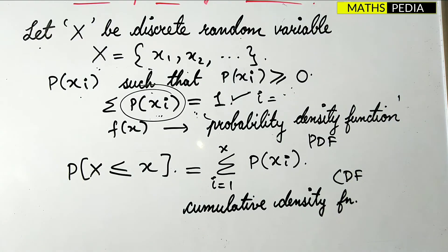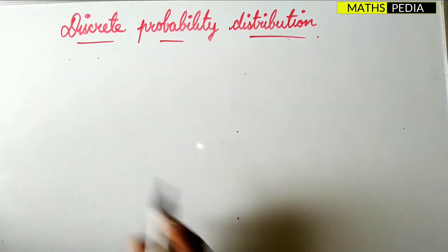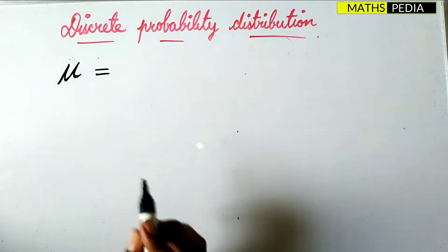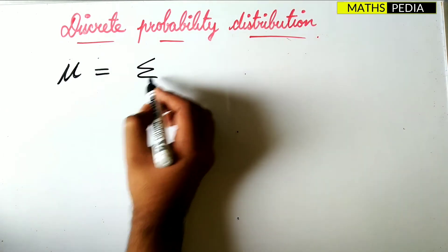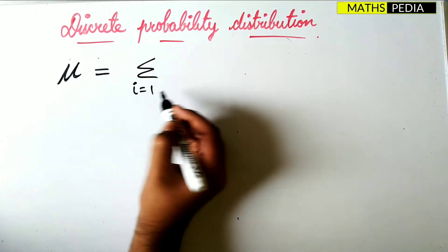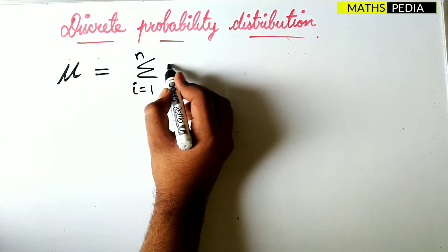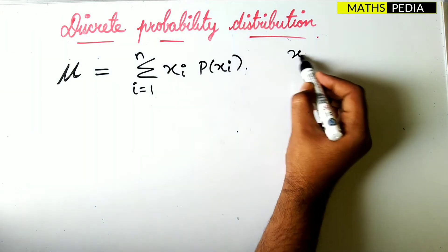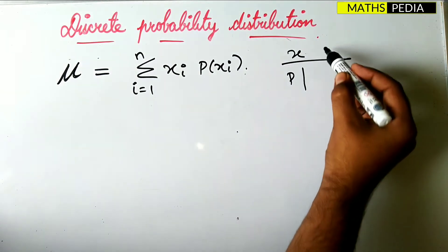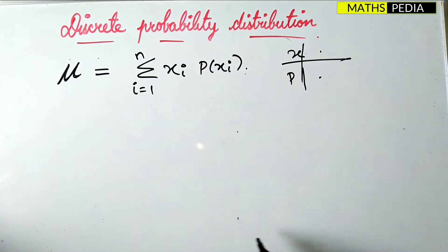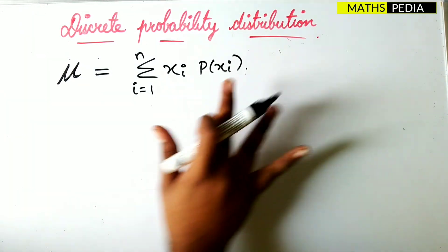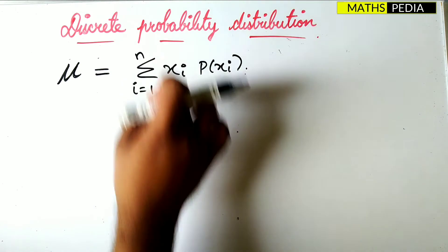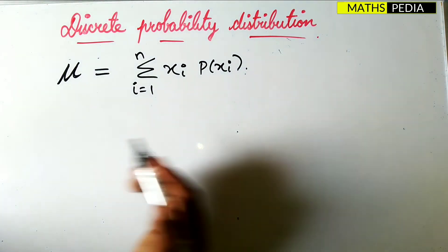Now for the formulas for mean, variance, and standard deviation of a discrete probability distribution. The mean is denoted by mu and equals the summation from i=1 to n of X_i times P(X_i). Some X values and some probabilities will be given, and you multiply each X value by its corresponding probability and add all the quantities to get the mean.